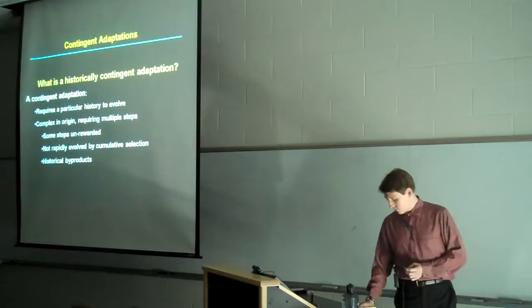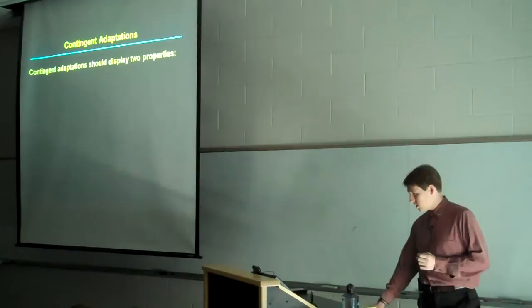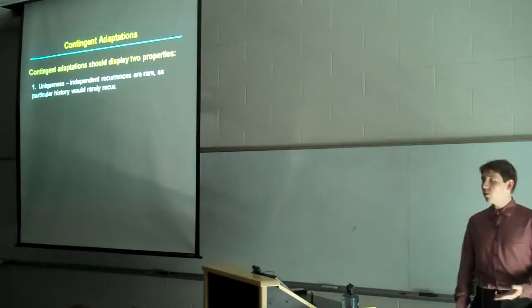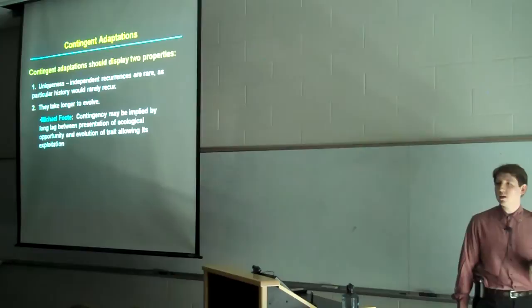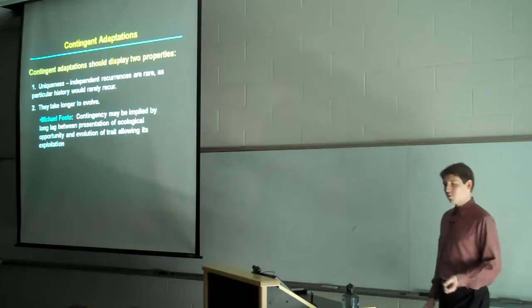As a consequence, it would not be rapidly evolved by selection and would be fundamentally a historical byproduct of evolution. Contingent adaptation should be distinguished by two properties. First, they should be unique, or more or less unique. Independent recurrences should be rare because the needed history will rarely recur. Second, they should take longer to evolve. Indeed, the paleontologist Michael Foote has pointed out that contingency may be implied by a long lag between the presentation of an ecological opportunity and the evolution of a trait that allows its exploitation.